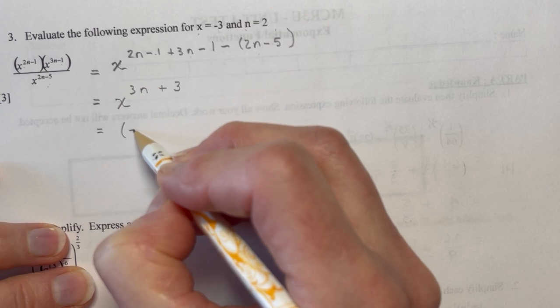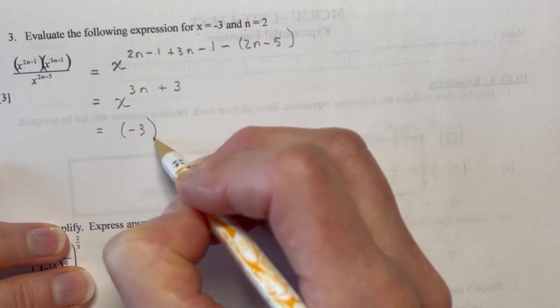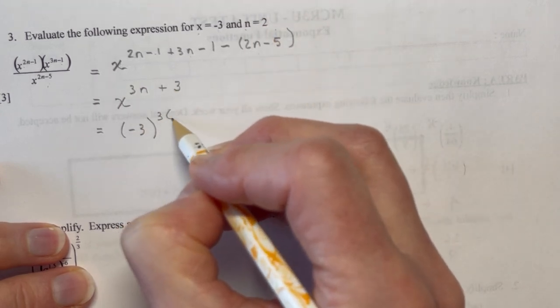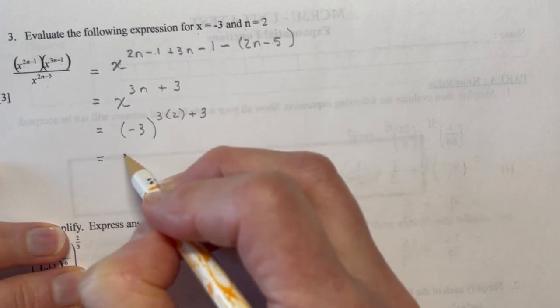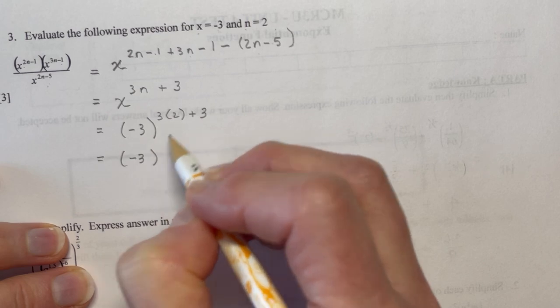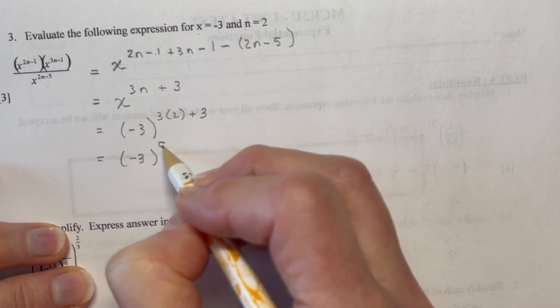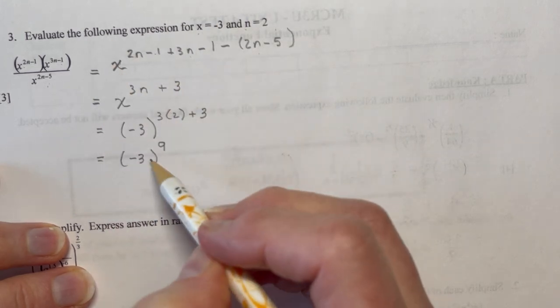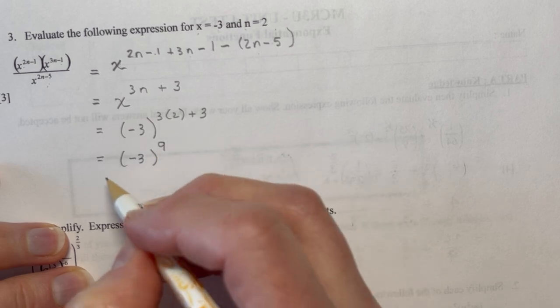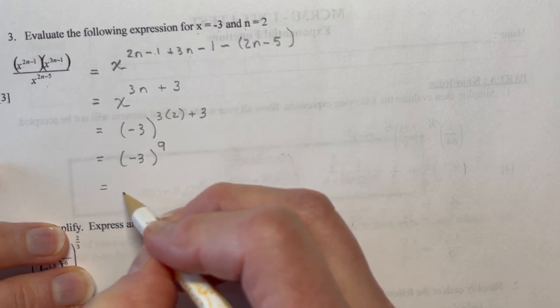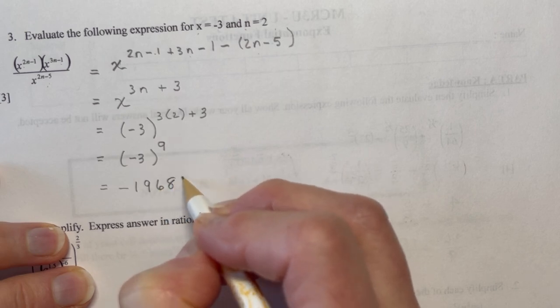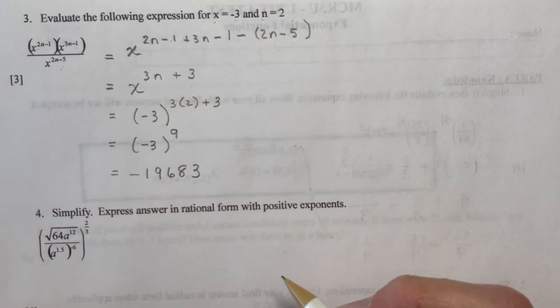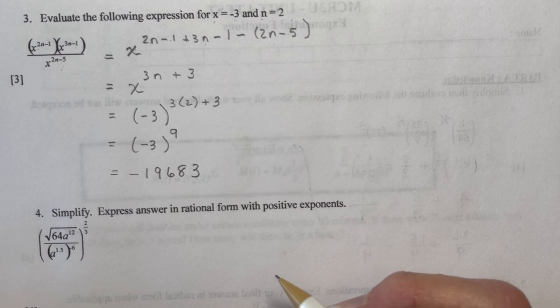So x is minus 3, put it in brackets. n is 2, so I have 3 times 2 plus 3. And that's going to be minus 3 to the power of 9. Now evaluate. This isn't finished, right? You would have to get out your calculator. And I did use my calculator to get this answer. Obviously, I couldn't do that in my head, and I doubt very much you could either.